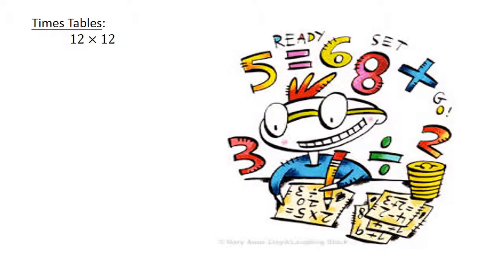Times tables. 12 times 12 equals 144. 6 times 7 equals 42.